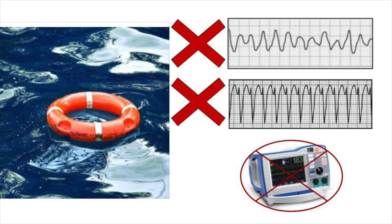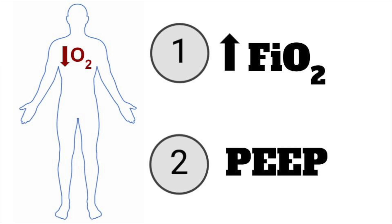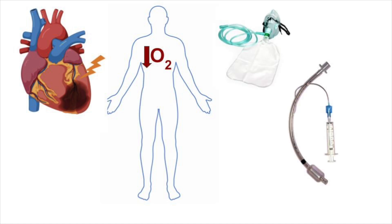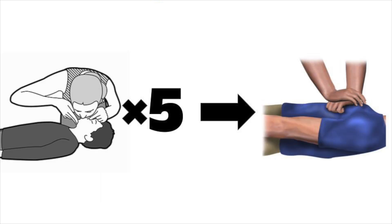Moving on to management, the important thing to keep in mind is that drownings are primarily hypoxic events, so all of our treatment needs to focus on reversing hypoxia by increasing FiO2 and providing PEEP or positive pressure ventilation. If patients are in cardiac arrest, we need to recognize this is likely a hypoxic cardiac arrest and incorporate ventilation and oxygenation into our management — this is not the time for compression-only CPR. In fact, some guidelines recommend giving five full rescue breaths before starting compressions.